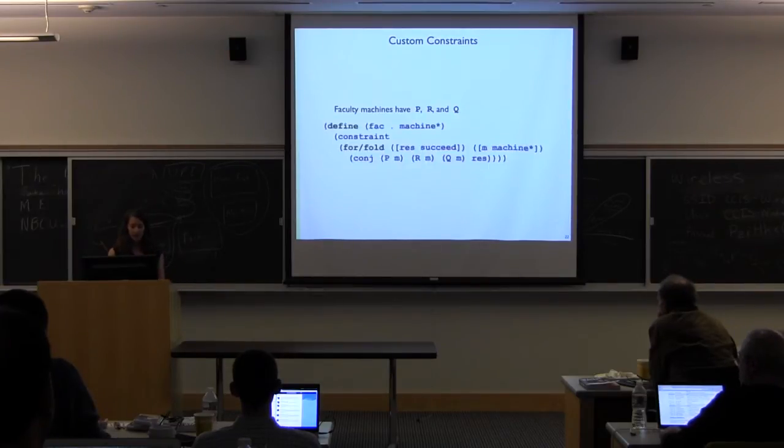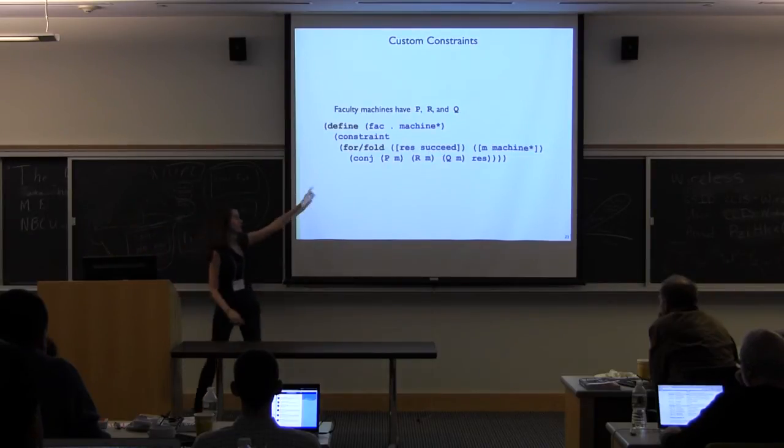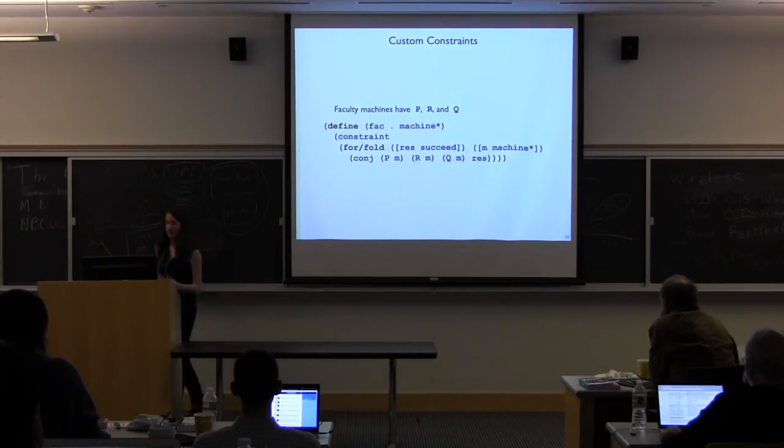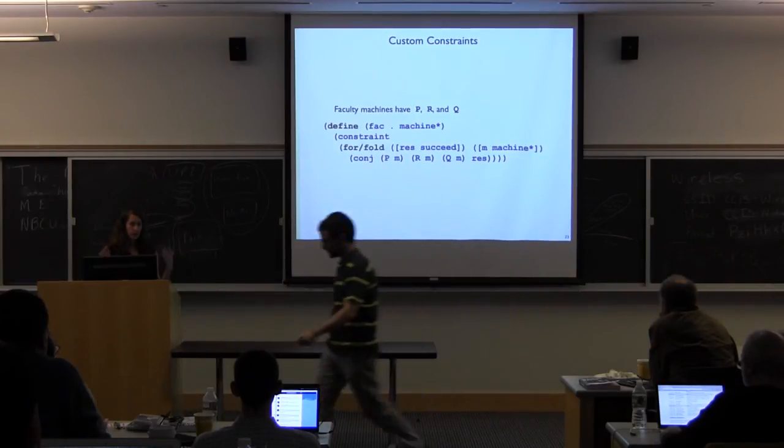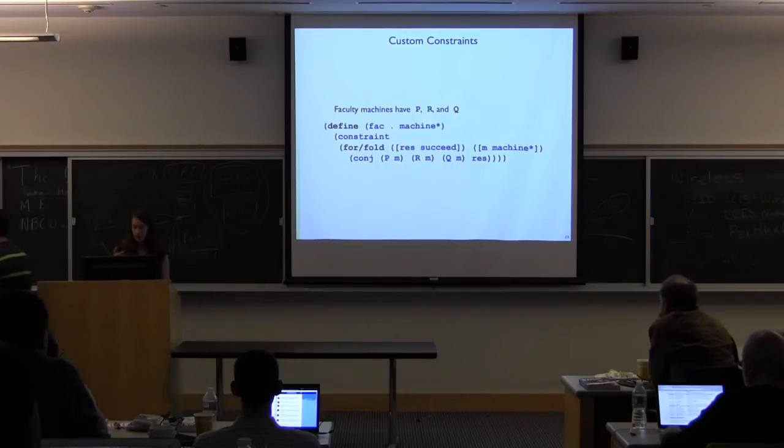So if I were going to define a function that kind of describes what faculty machines can do, I would say, well, this faculty location can have any number of machines. And it returns a constraint that says, for all the machines, and as you can see, I can use whatever racket code I want to in the body. I have this fold that says I'm going to accumulate all the constraints that I need to add up to make these machines have the right permissions. So I'm adding P and Q and R to all the machines that are coming in as faculty machines.